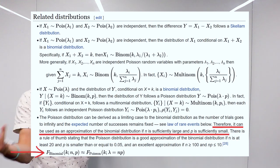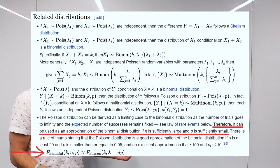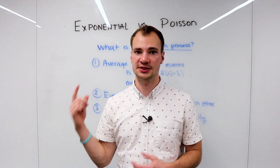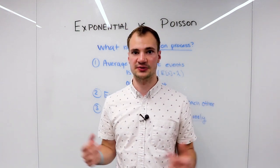This actually allows us to estimate the binomial, which is a series of Bernoulli trials, using the Poisson distribution. Now that we have this groundwork, let's look at the difference between the exponential and the Poisson distributions themselves.